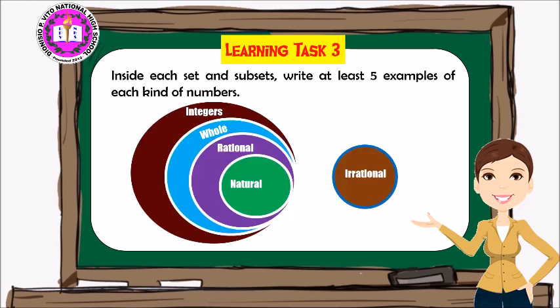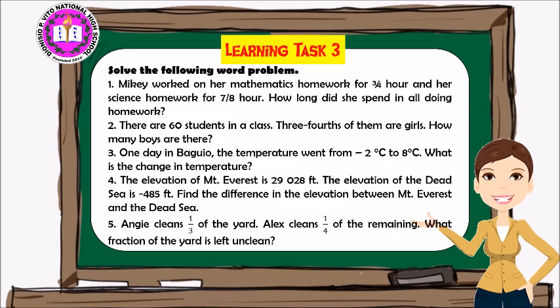Now let's proceed to answering Learning Task Number Three. Inside each set and subset, write at least five examples of each kind of number. Then solve the following word problem.